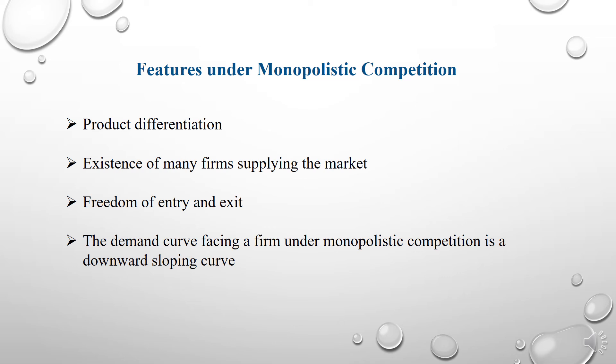Now we will discuss price determination under monopolistic competition. Under monopolistic competition, the firm will be in equilibrium position when marginal revenue is equal to marginal cost (MR = MC). So long as the marginal revenue is greater than marginal cost, the seller will find it profitable to expand output. If MR is less than MC, the firm will reduce output to where MR equals MC. In the short run, the firm will be in equilibrium and maximizing profits when MR equals MC.